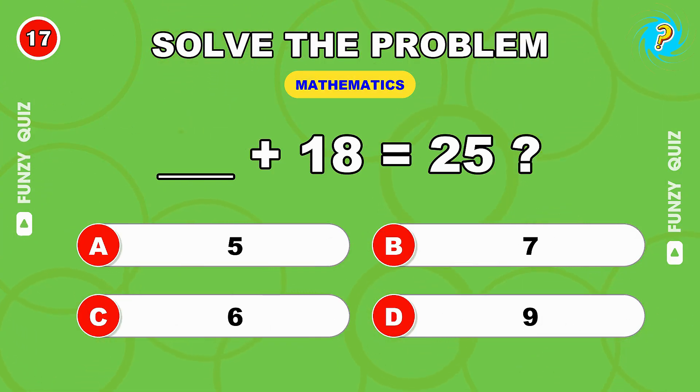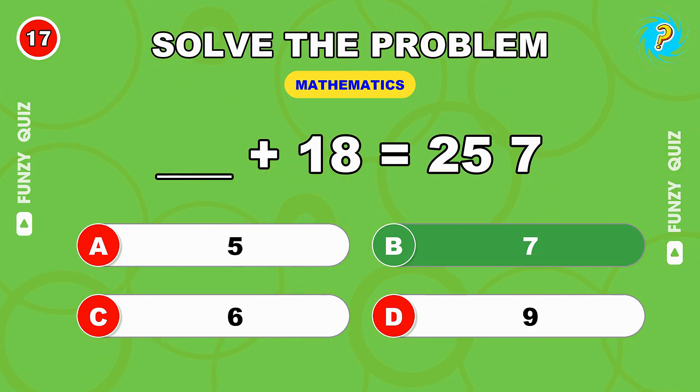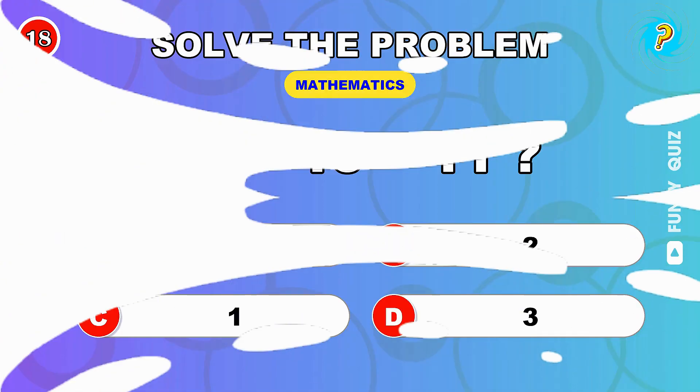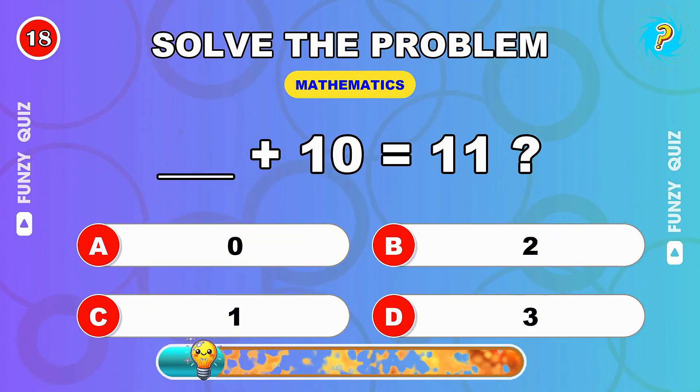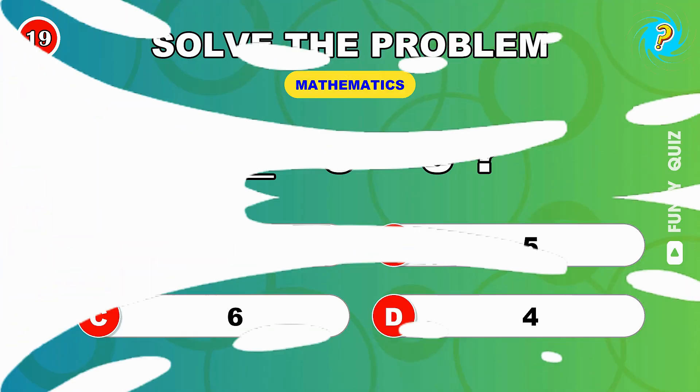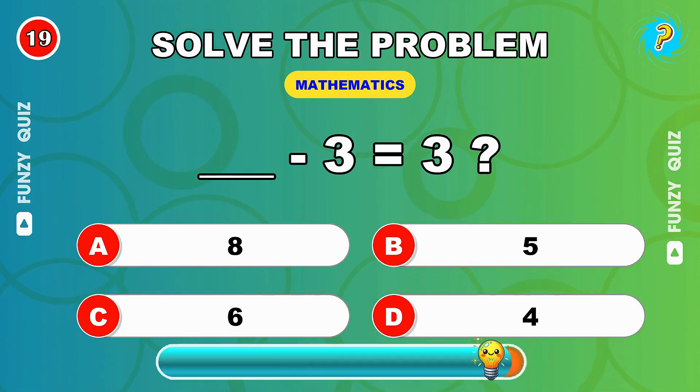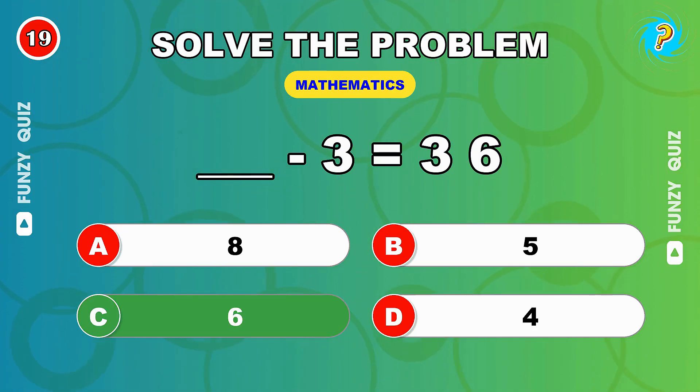What number plus 18 equals 25? 7, great work. Fill this in: what number plus 10 equals 11? 1, right on. Nice work. What number minus 3 equals 3? 6, absolutely.